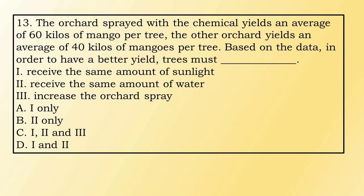Number 13. The orchard spray of the chemical yields an average of 60 kilos of mango per tree. Based on the data, in order to have a better yield, trees must: Number 1, receive the same amount of sunlight. Number 2, receive the same amount of water. Number 3, increase the orchard spray. A. Number 1 only. B. Number 2 only. C. One, two and three. D. One and two.